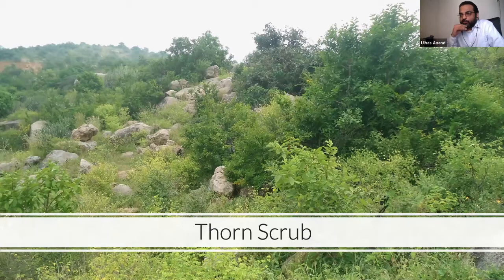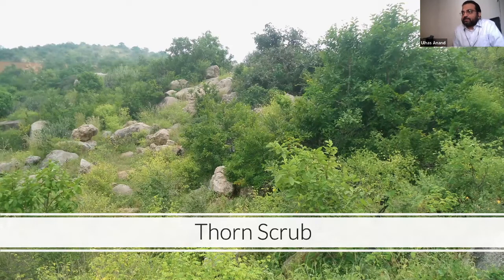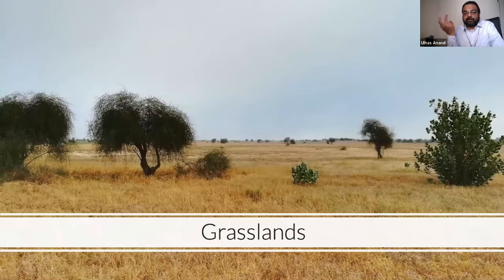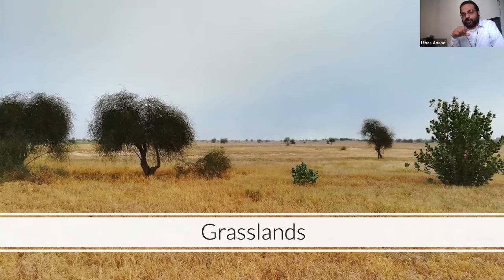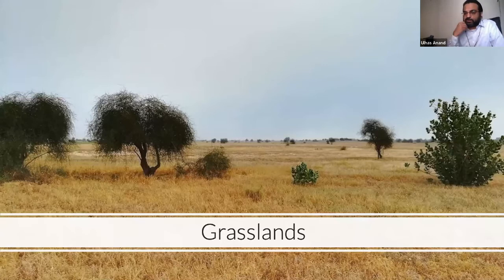Traditionally, Bangalore's vegetation has been thorn scrub - thorny bushes sprinkled with smaller shrubs and a few trees spread across old rocks. In some places it was just plain grassland, and you can still see remnants of these in Hesarghatta, Nandi Hills, Devanahalli, and Kanakapura. Grasslands are very transient ecotypes - with more rain a grassland becomes scrub forest, with less rain it becomes desert. In Bangalore, repeated tree planting and introduced species have caused a lot of habitat change.